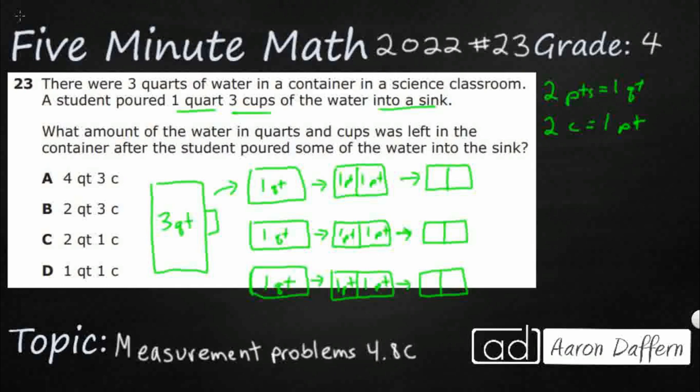Now it says that for each pint, I've got two cups. So I'm just going to cut each of these in half and I'm going to put two cups in each. I'll just put the letter C.